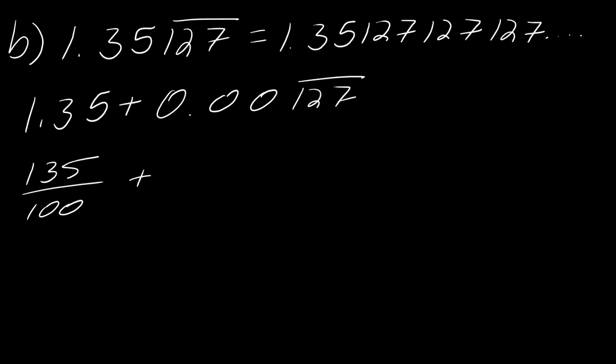If I wanted to represent this, I've got 127 over really 10 to the fifth. This is one, two, three, four, five spots, so that's the same as 10 to the fifth. We'll just write it like that to make it easier.